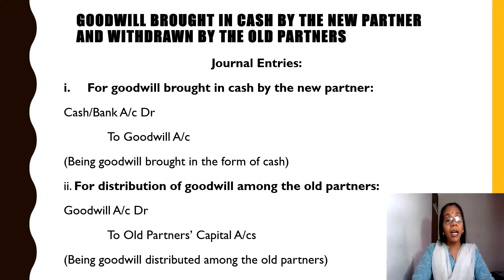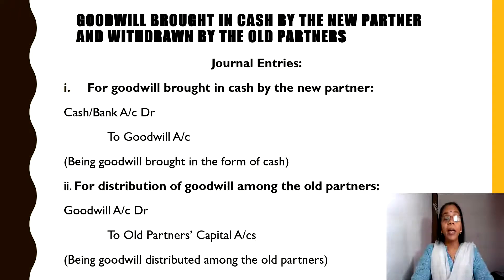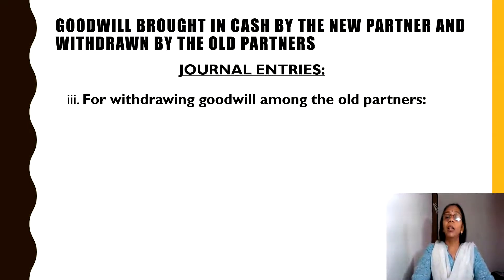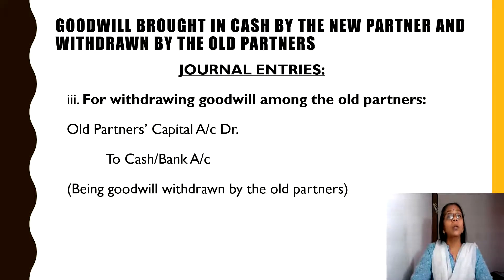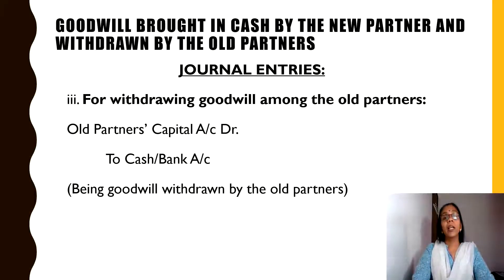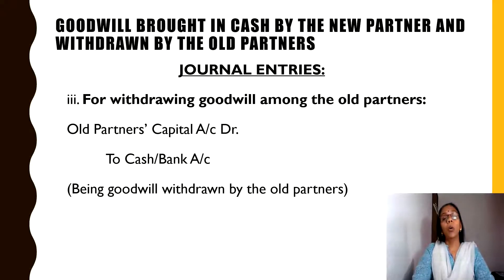There will be one additional journal entry for the withdrawal of goodwill by the old partners. Withdrawal means taking home their share of goodwill. When the old partners are withdrawing the goodwill from the business, money goes out of the business — credit what goes out. The journal entry would be: Old Partners' Capital Account Dr. to Cash or Bank Account — being goodwill withdrawn by the old partners.